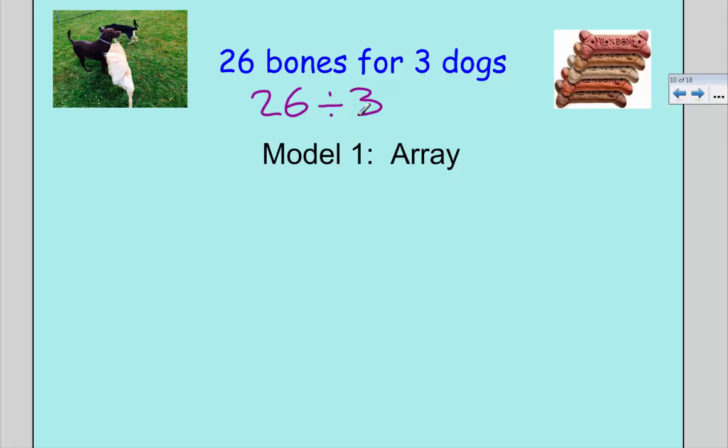The first model I can use to show this is an array. Each one of my dogs is going to be a row. I'm going to have a row for Scoop, a row for Lucy, and a row for Sully. I'm going to use S-U for Sully. And then I'm going to keep fishing out my bones. I've given out three bones so far.